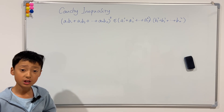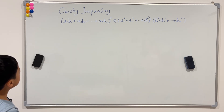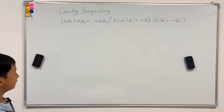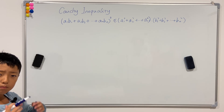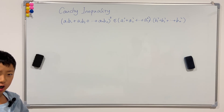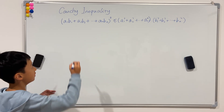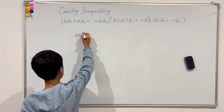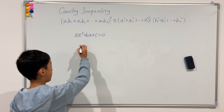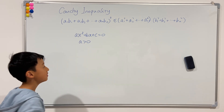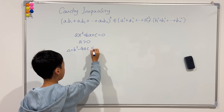Let's get into the proving. Method one: let's first look at this — we have something squared is less than or equal to something times something. When might that occur? Well, of course in quadratic equations. When there is a quadratic equation ax² + bx + c = 0, and a is greater than zero, and the delta, which is b² minus 4ac, is less than or equal to zero.